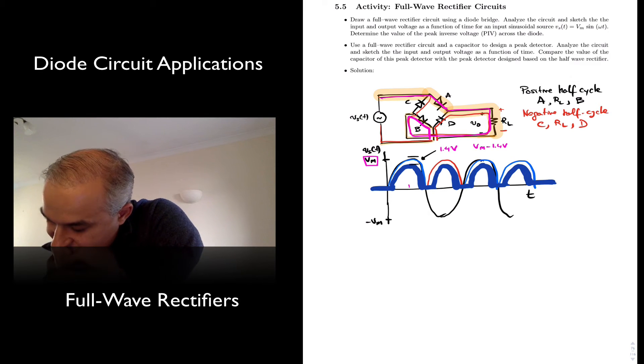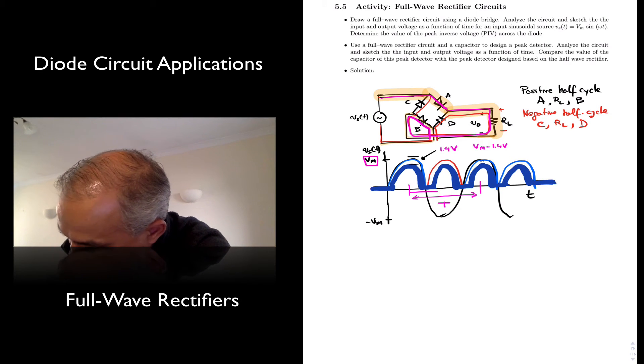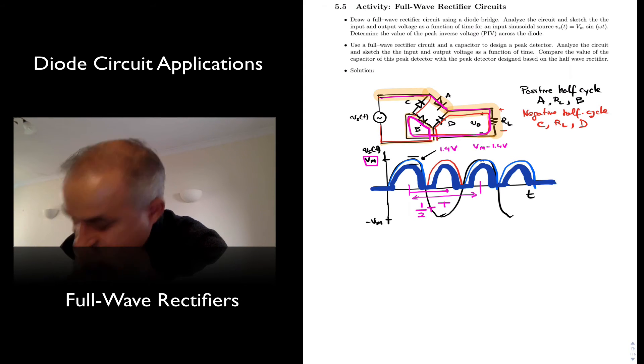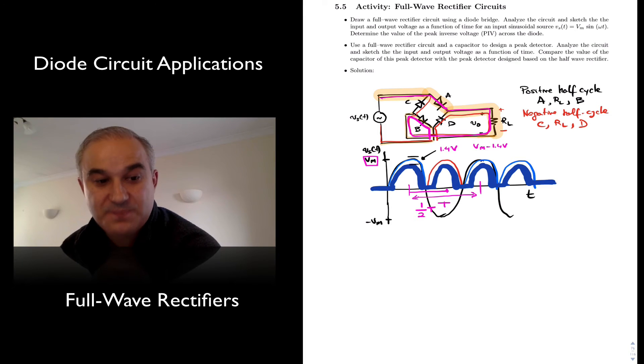We also saw that while in half-wave rectification, the period was the same, right, positive to positive as the input, or the frequency is the same. This was for half-wave rectification. In full-wave rectification, this is half now. One half T, where T is the period of your input waveform.